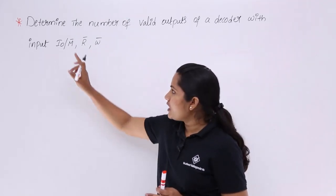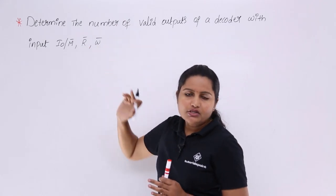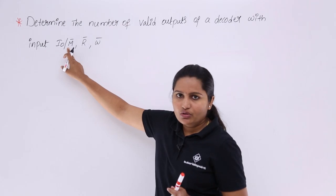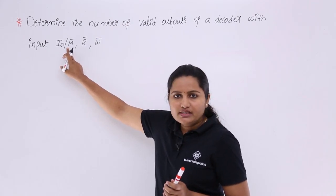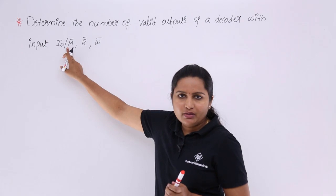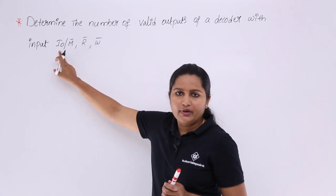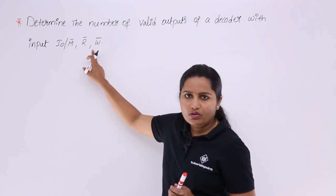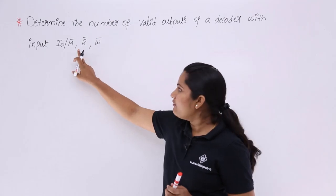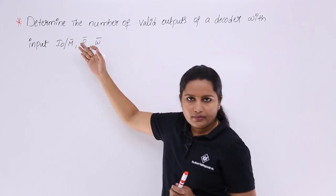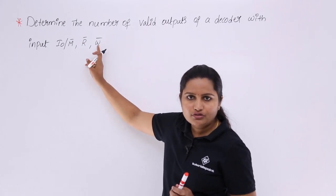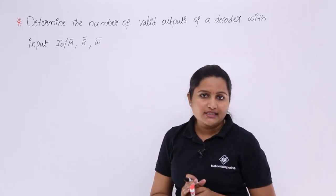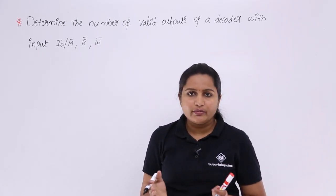I/O and M (memory) are active low signals. If 0 comes on M, then a memory operation takes place; if 1 is there, then an I/O operation takes place. For read and write, these are also active low signals. When R equals 0, read operation takes place; when W equals 0, write operation takes place. At any given time, R and W cannot both be 0 simultaneously.